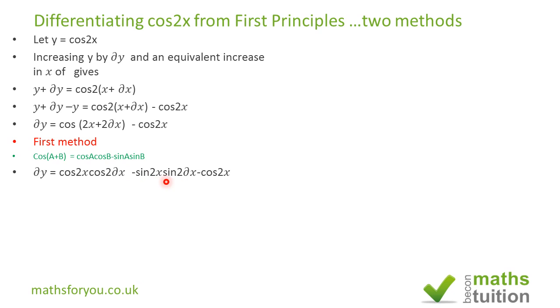Now we've got a common factor. So if we factorize, if we bring cos 2x outside, that becomes cos 2 delta x minus 1, and again minus sine 2x sine 2 delta x there.